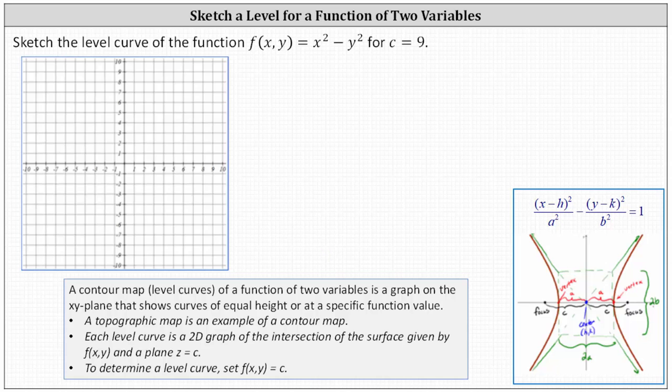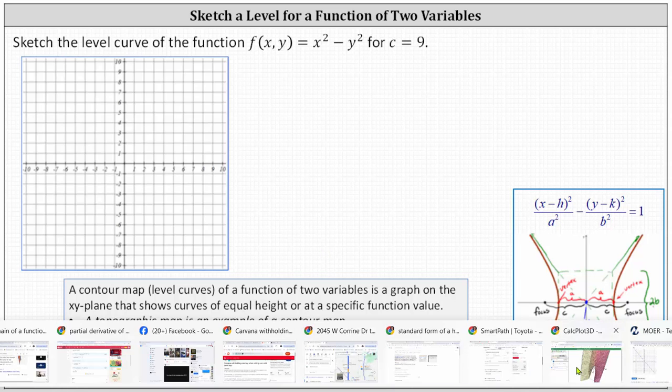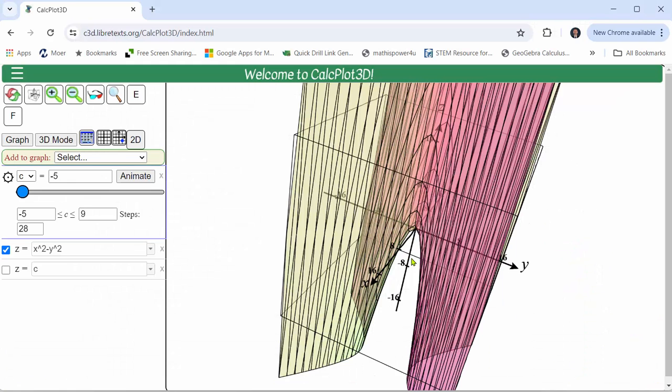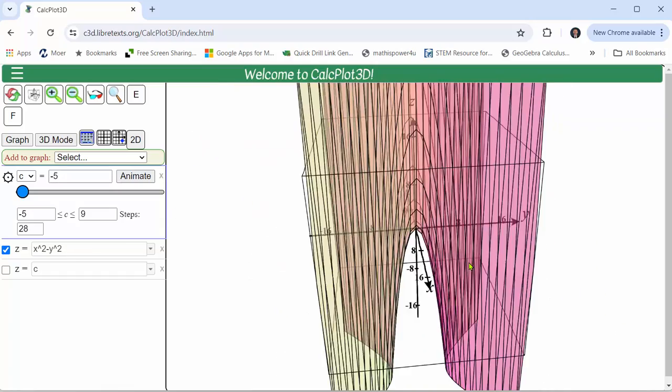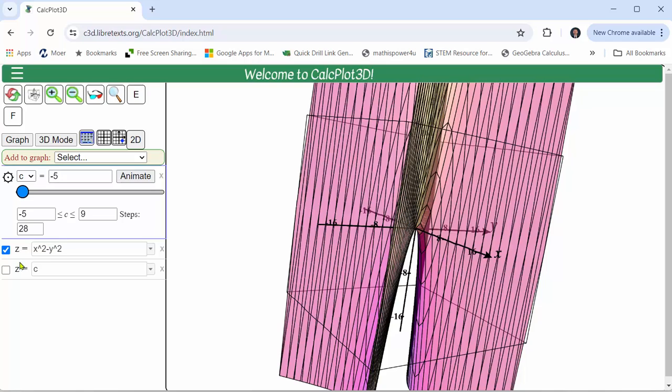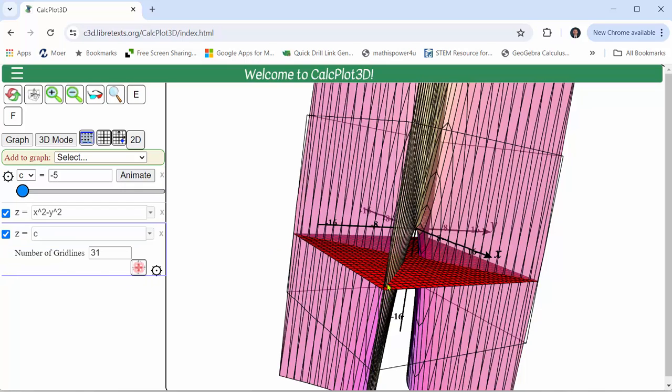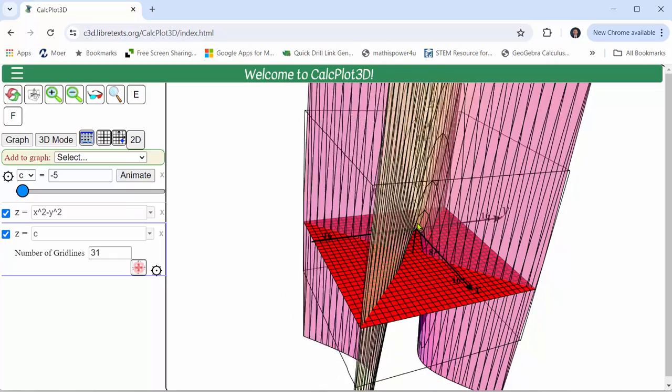Let's first look at this graphically. On the right we have the graph of the function f of x comma y and now let's graph the plane z equals negative five. The intersection of this plane on the surface is one level curve when we have c equals negative five.